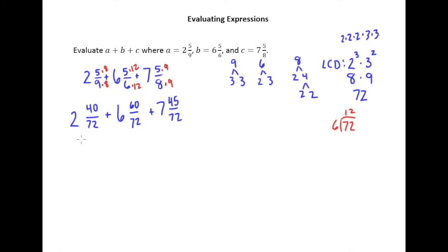So let's go ahead and add up the whole parts first. 2 plus 6 is 8, plus 7 is 15. And then maybe over on the side here, we'll add up those numerators. So 40 plus 60 plus 45, and that's going to give us 145.